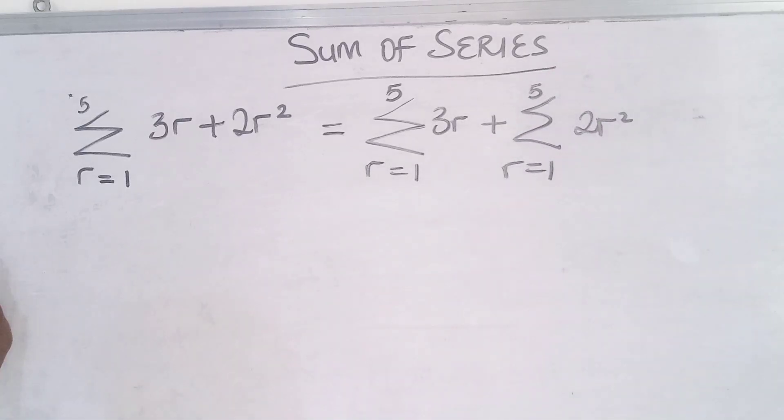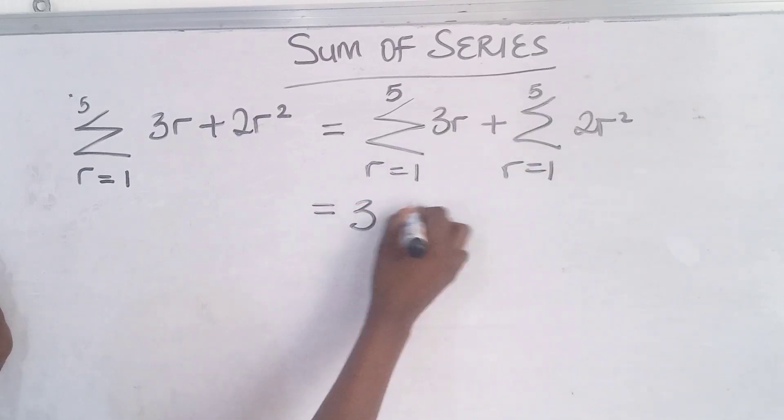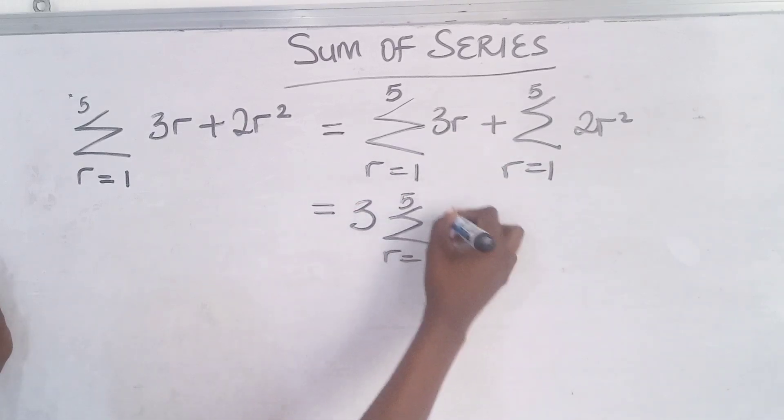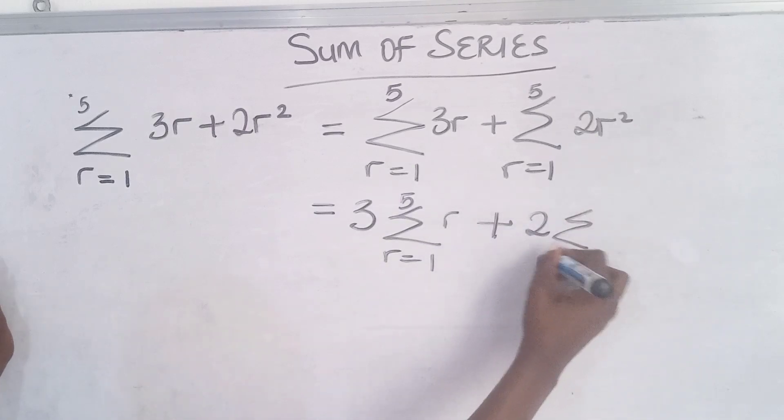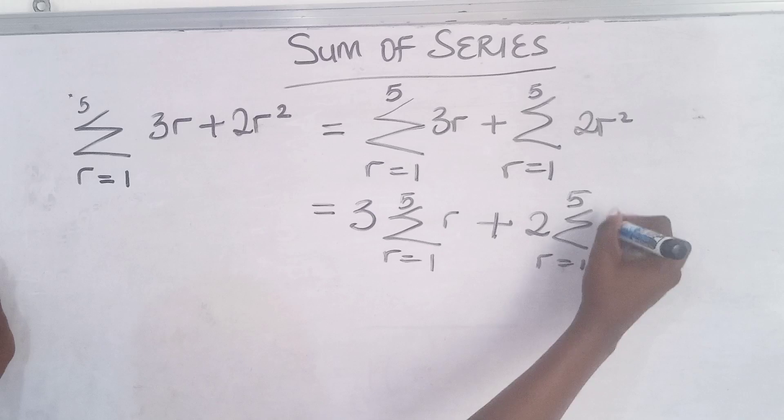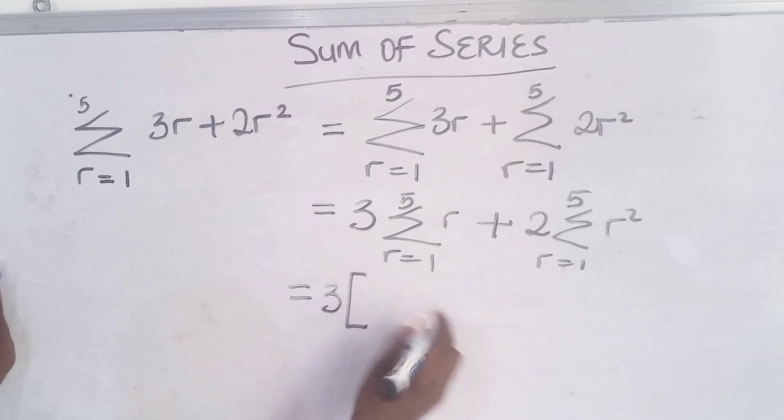These are constants, they can come behind. You have 3 times summation of r from 1 to 5, and 2 times summation of r² from 1 to 5. Now you can substitute. We have 3 open bracket, r is ranging from 1 to 5.